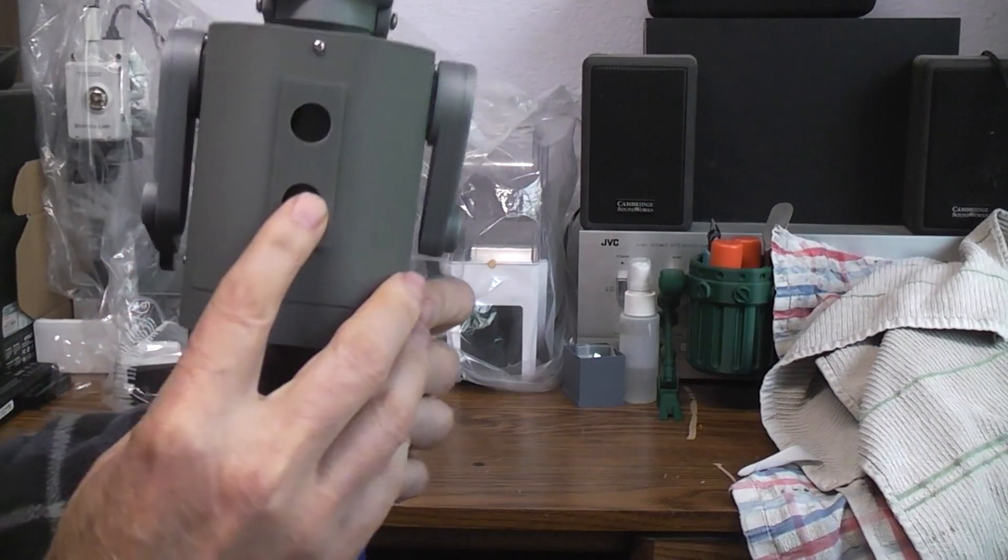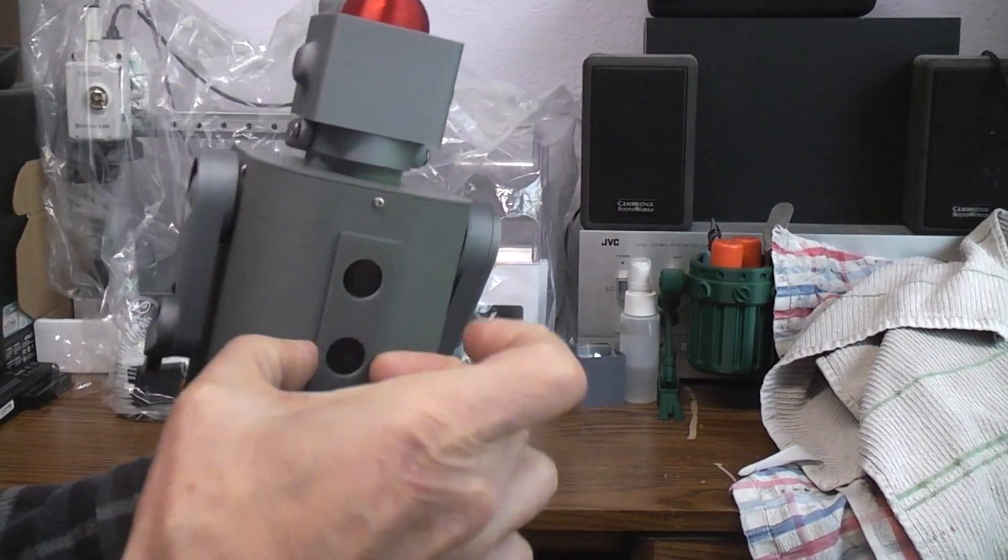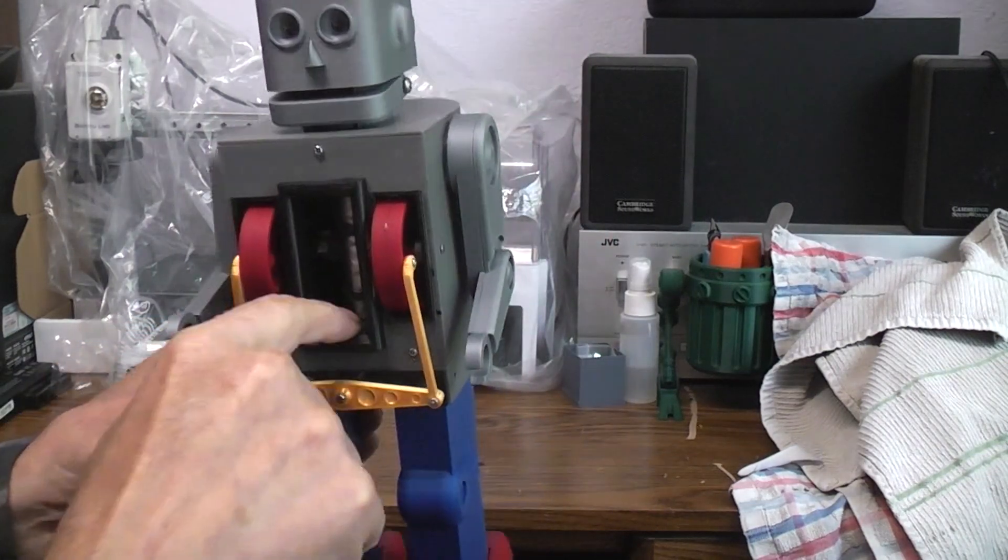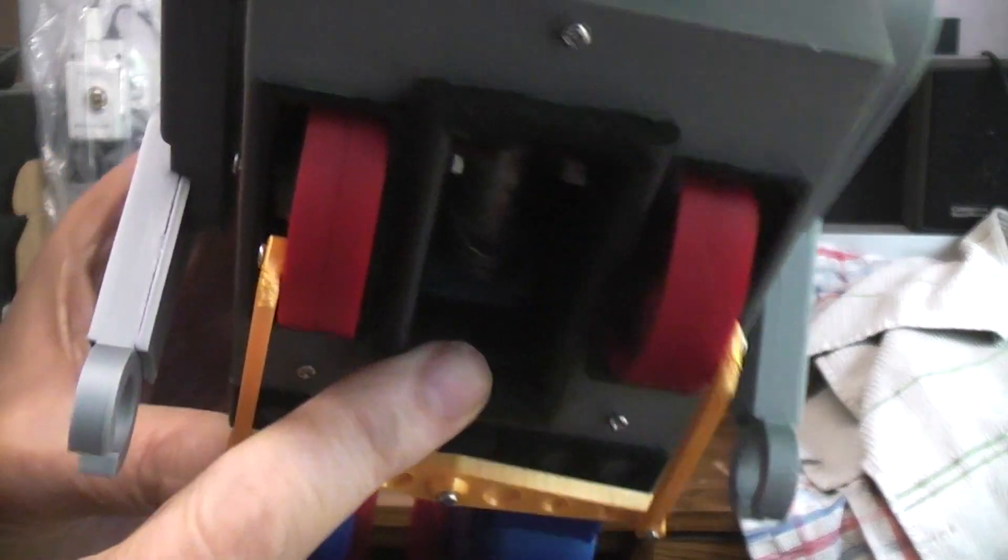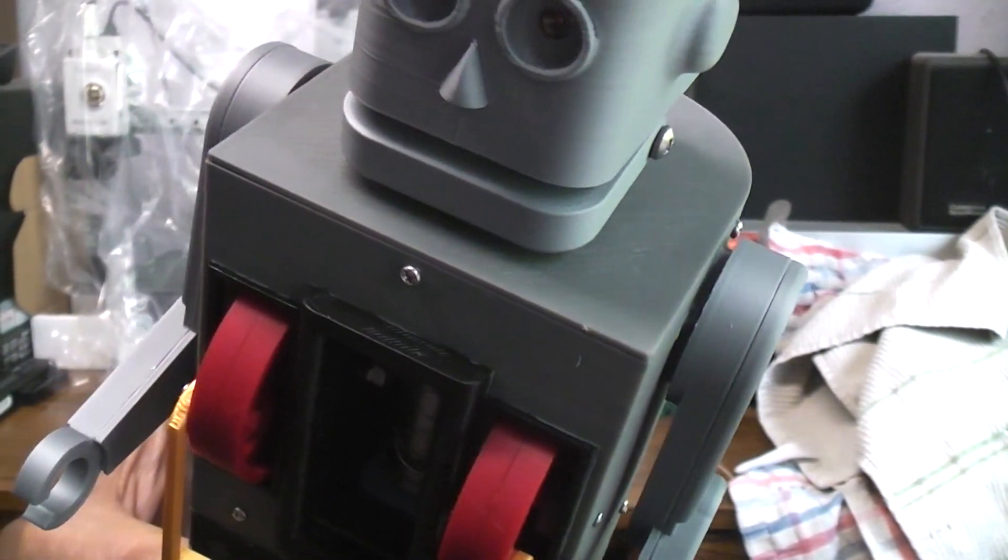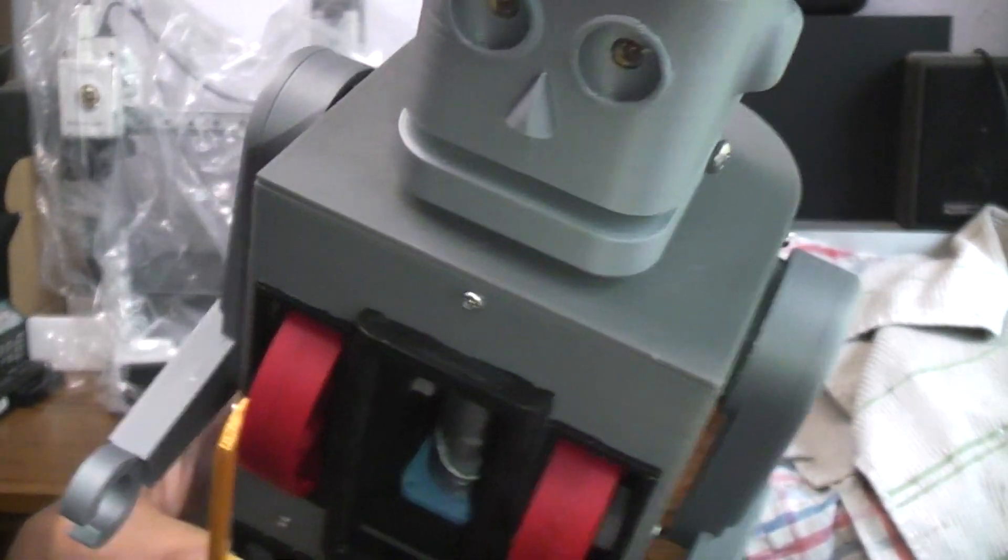The battery pack slips in the back. This door just pressure fits on. Three AAA batteries. Let me turn the light on the camera so you can see inside. There we go.